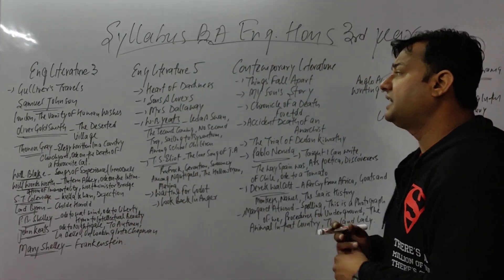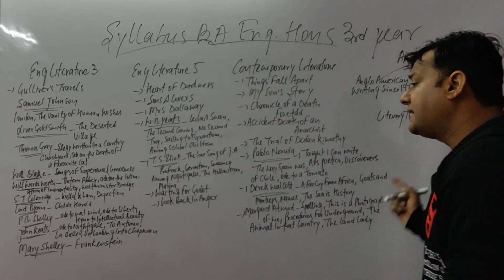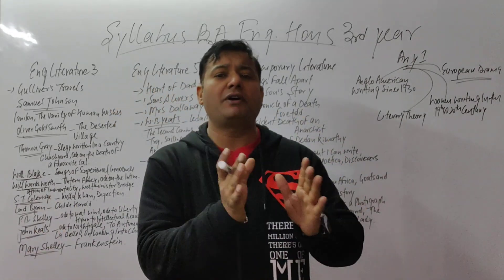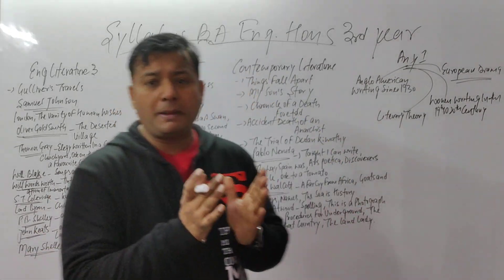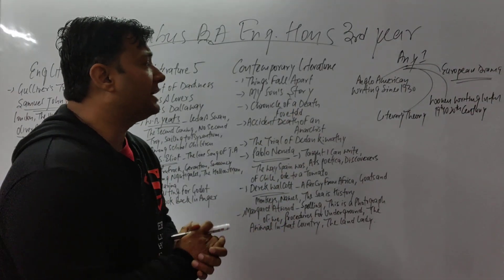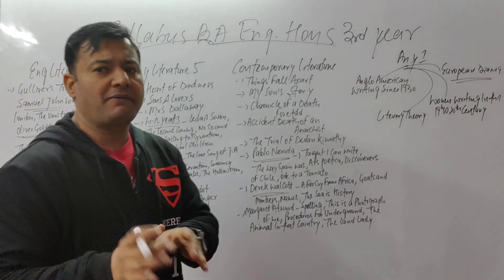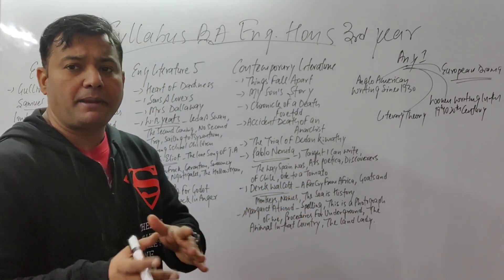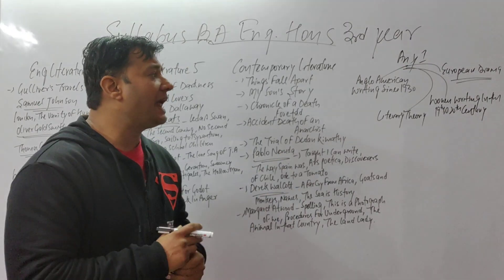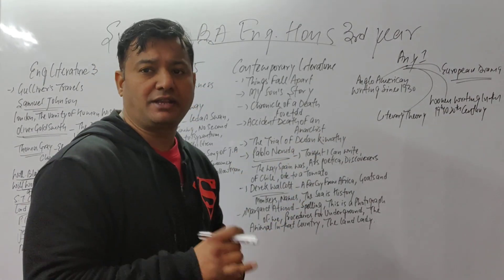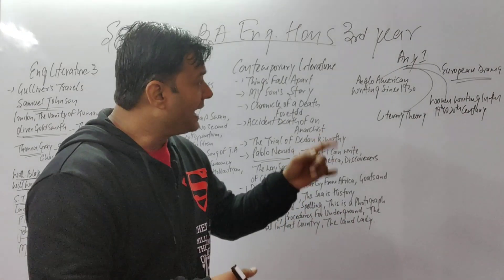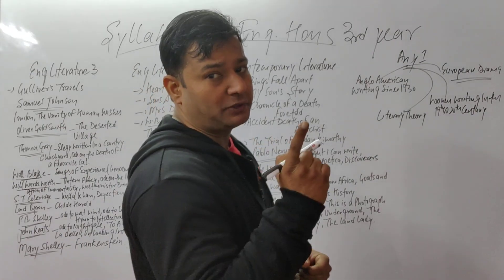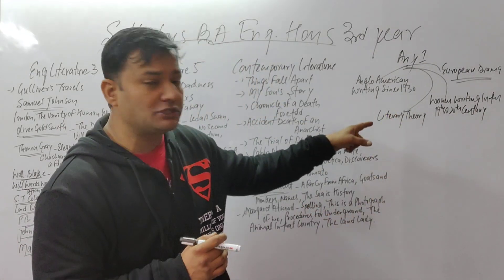We have English Literature 3, English 5, Contemporary Literature, and one choice paper out of four options. The first choice is American Writing Since 1930 — please don't go for this one. Next is Literary Theory — yes, you can go for this. Then we have Women's Writing in the 19th and 20th Century, and my favourite: European Drama, which will also help in your NET paper.